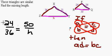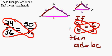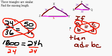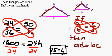So now we have 24 over 36 equals 50 over H. Cross multiplying: 24 times H equals 36 times 50. 36 times 100 would be 3600, so 36 times 50 is 1800. So 1800 equals 24H. Dividing both sides by 24, we find that 24 goes into 1800 seventy-five times. So H equals 75 — the same answer we got before.